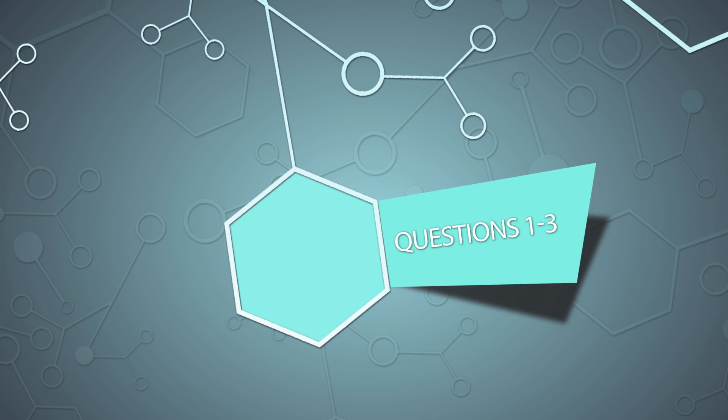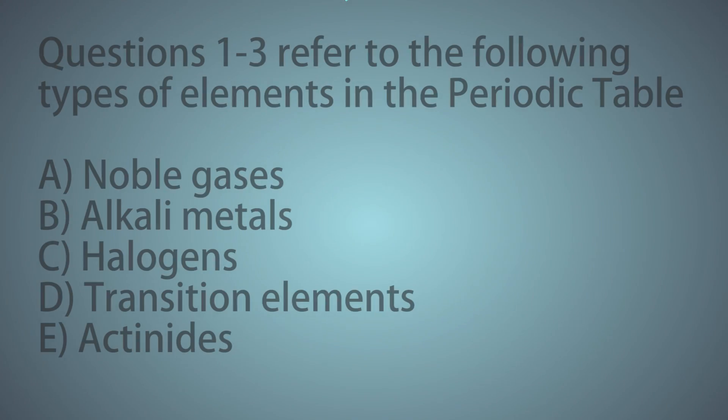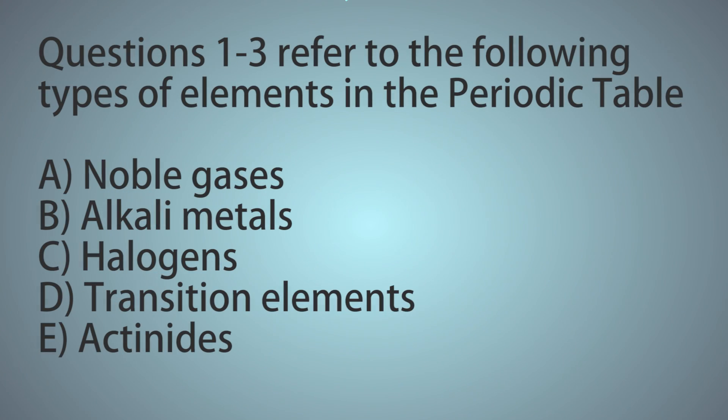Questions 1 through 3 refer to the following types of elements in the periodic table: A. Noble gases, B. Alkali metals, C. Halogens, D. Transition elements, E. Actinides.